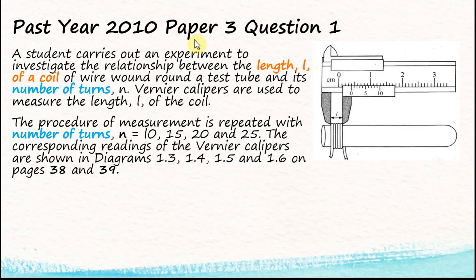Let's have a look at the first question. This is the past year 2010 Paper 3 Question 1. A student carries out an experiment to investigate the relationship between the length L of a coil of wire wound around a test tube and its number of turns N, when calipers are used to measure the length L of the coil. From the diagram, the length L is the distance from the first turn of wire to the last turn of wire.